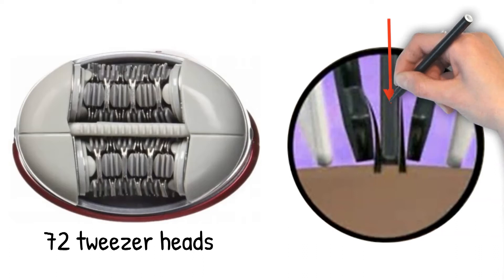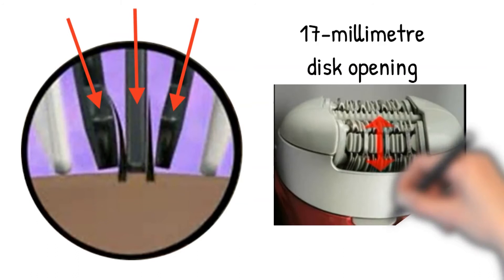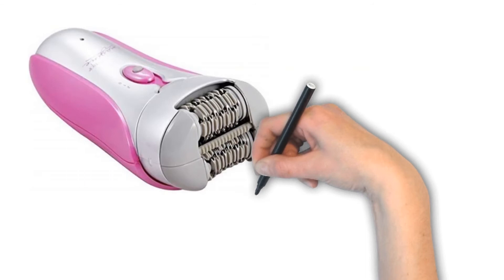One fixed tweezer disc and two which open and close work together to capture every single hair. A 17mm disc opening creates the optimal radius to remove any lingering strands effectively. In addition, the Emjoi's patented Glide Technology lifts the hair to enable the tweezers to skate over the skin in order to help with minimizing irritation.